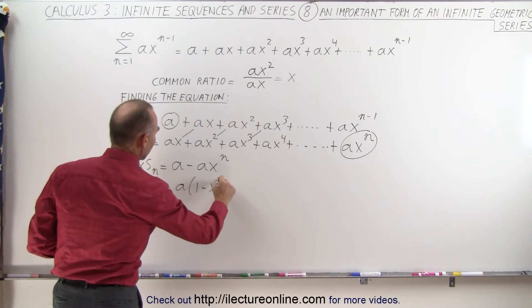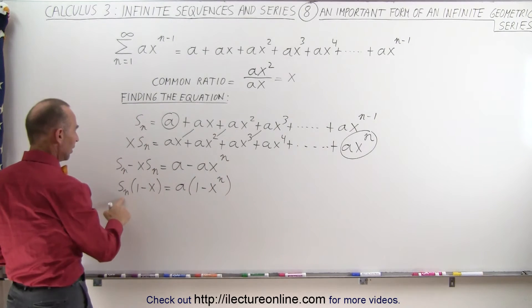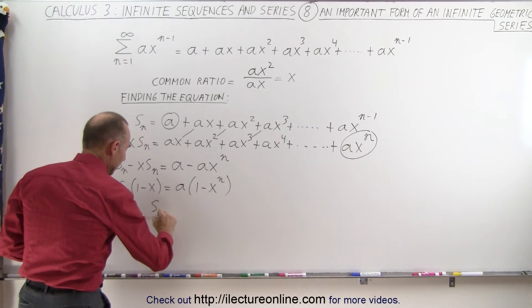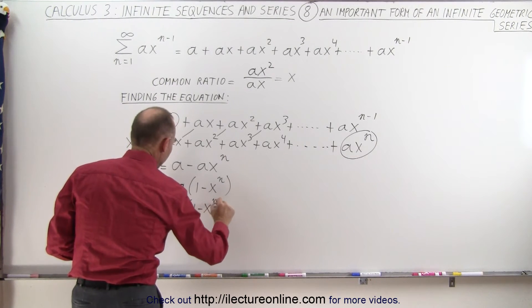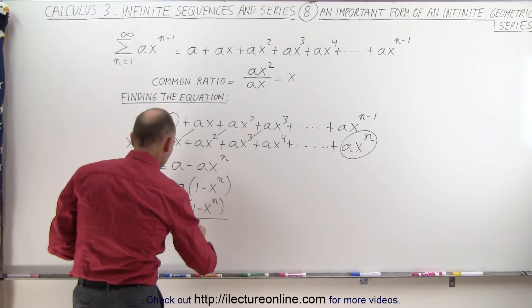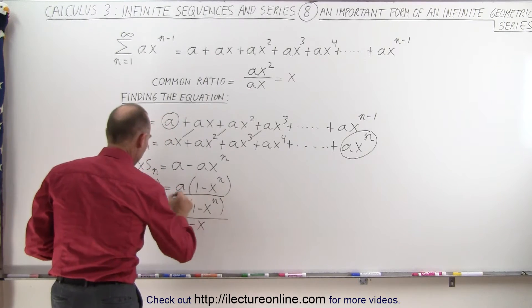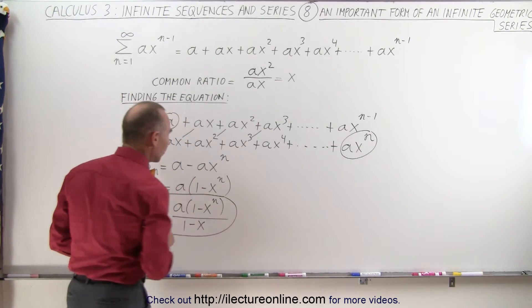Times 1 minus x to the n power. And then you can see solving for s sub n, I get a times 1 minus x to the n power divided by 1 minus x. Now this would be the general equation of that series.